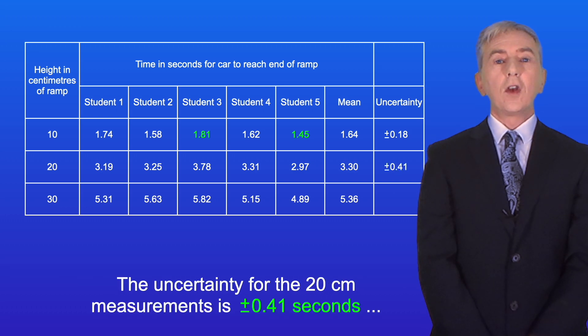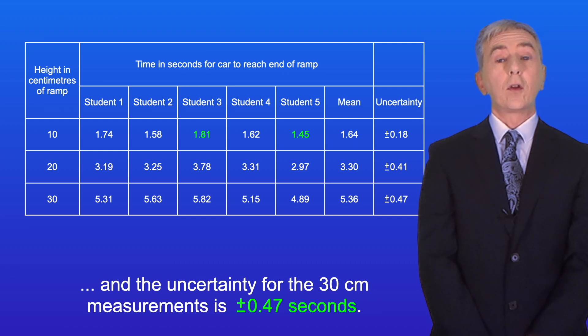Okay the uncertainty for the 20 centimeter measurements is plus or minus 0.41 seconds and the uncertainty for the 30 centimeter measurements is plus or minus 0.47 seconds.